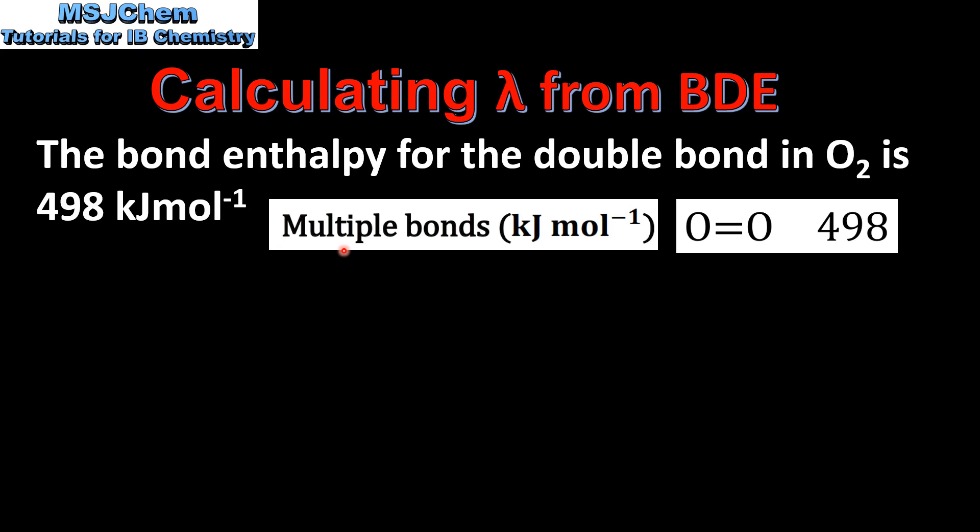This information is in the data booklet under multiple bonds and here we can see the double bond in the oxygen molecule has a value of 498 kilojoules per mole to the negative one.